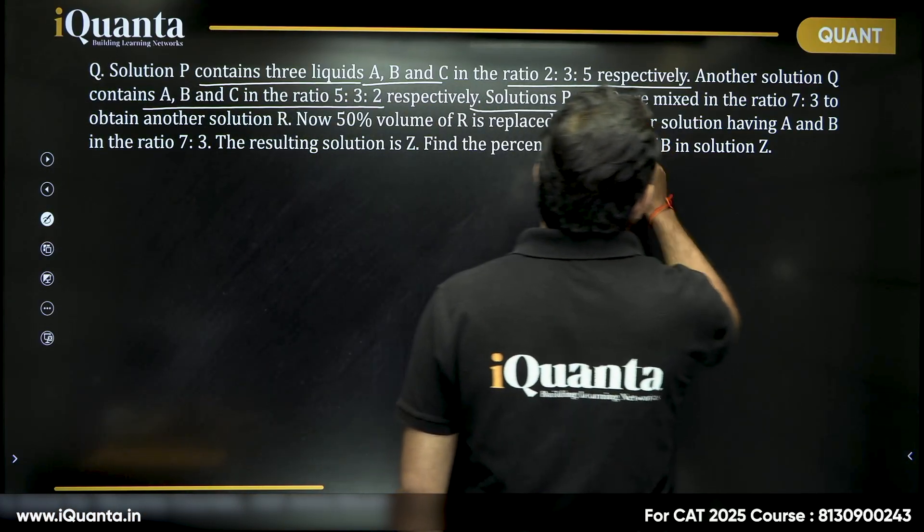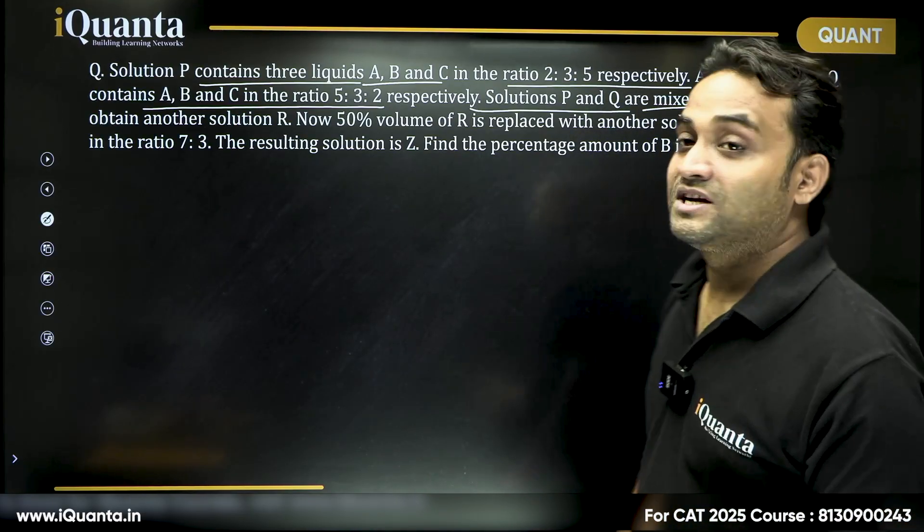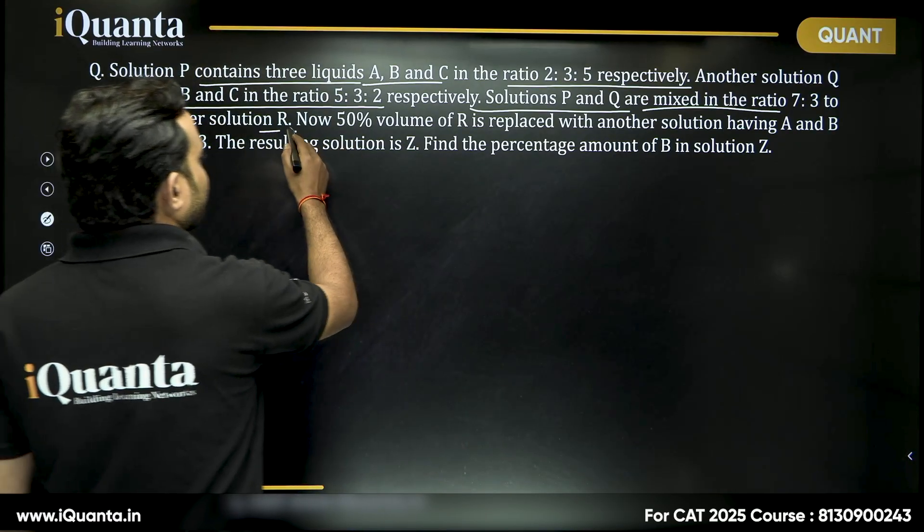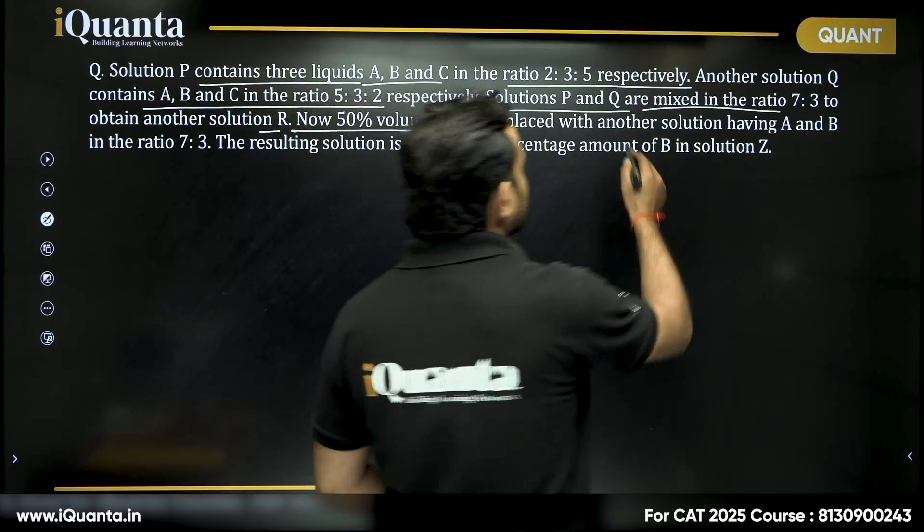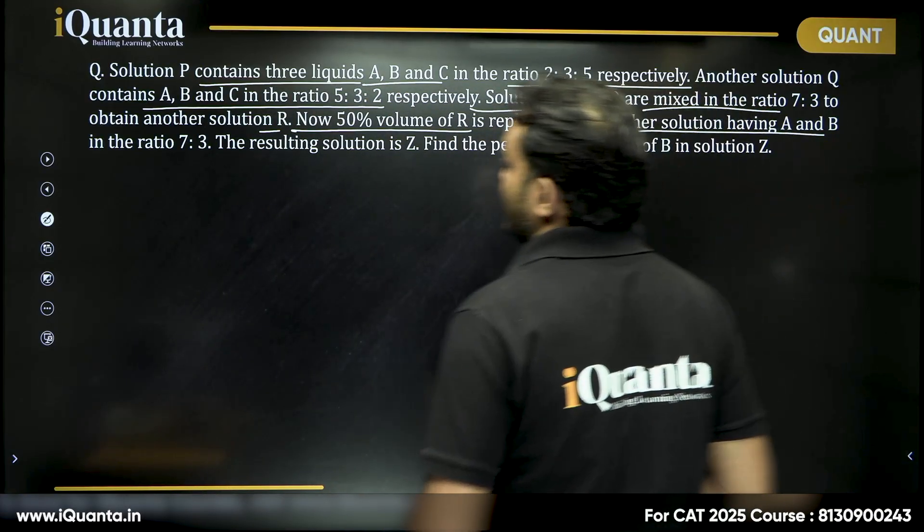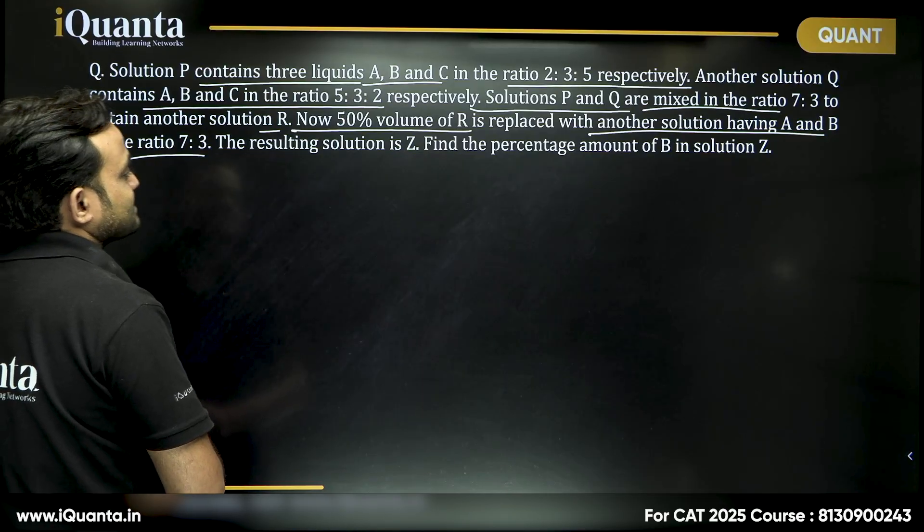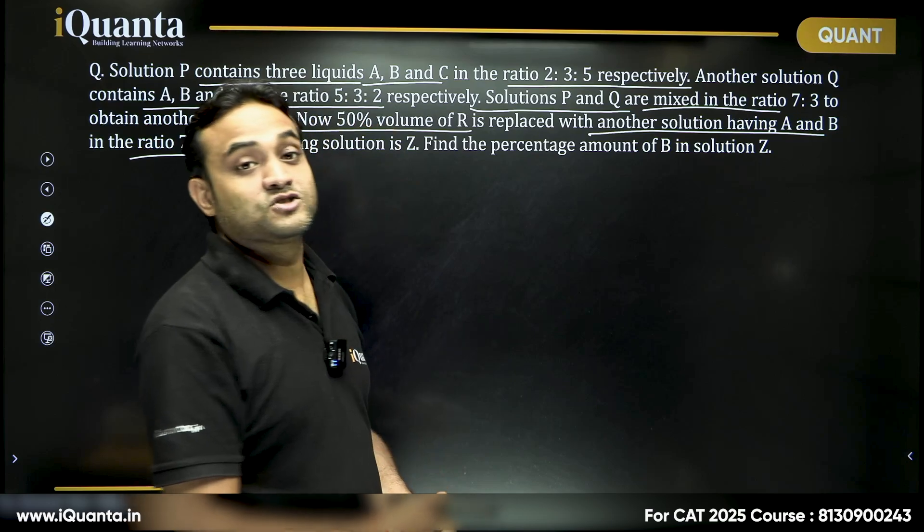Solutions P and Q are mixed in the ratio 7 to 3 to obtain another solution R. Now 50% volume of R is replaced with another solution having A and B in the ratio 7 is to 3. The resulting solution is Z, find the percentage amount of B in solution Z.